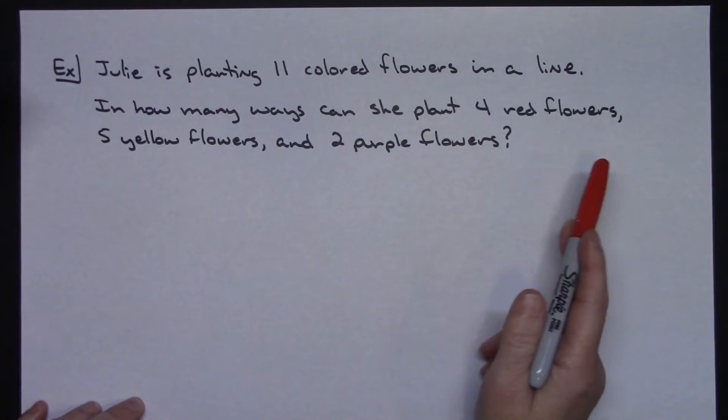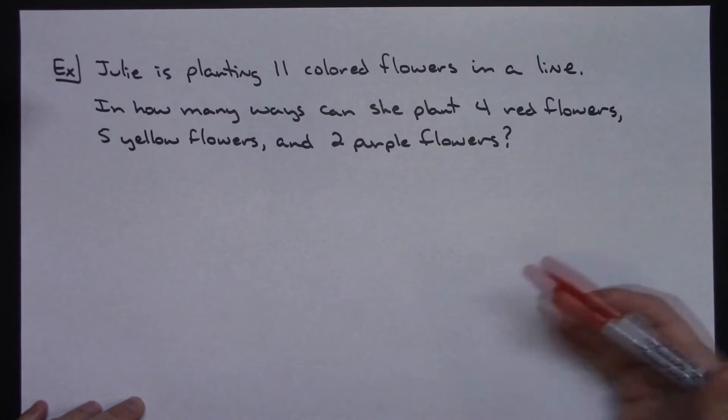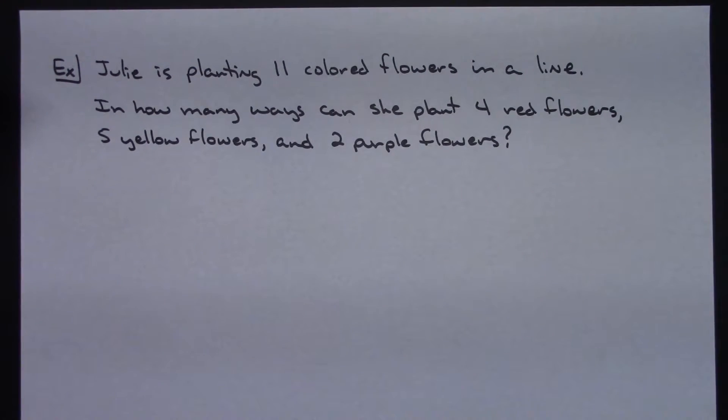So we've got identical objects, flowers, but they're just of a different kind because they're of a different color. So we're going to set this up using the second formula.